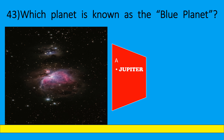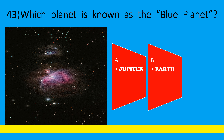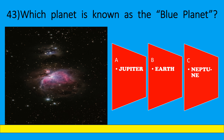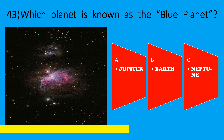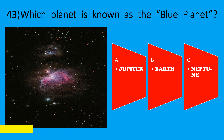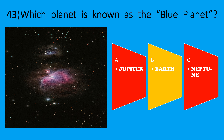Which planet is known as the blue planet? A: Jupiter, B: Earth, C: Neptune. The correct option is B, Earth.